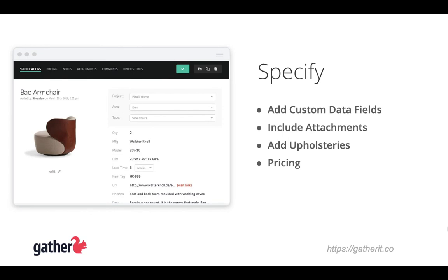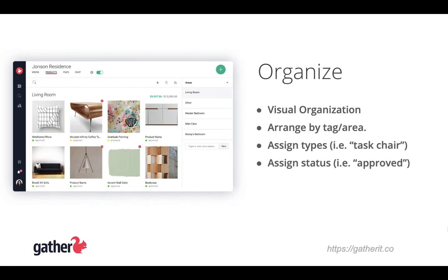Once you've done that, you can now add additional information like custom fields, attachments, upholsteries, and pricing. You can also organize your specifications by tag or area, assign them types, and even statuses.